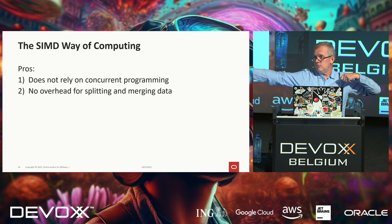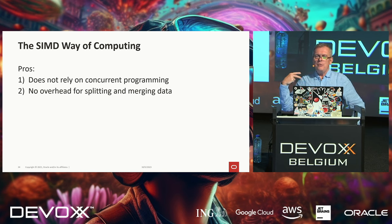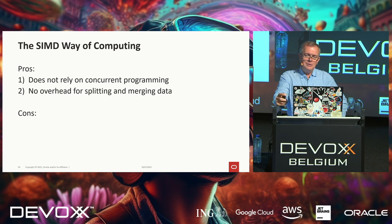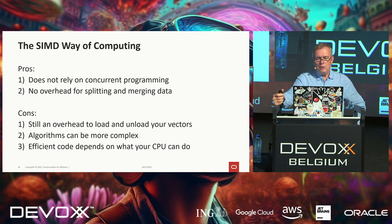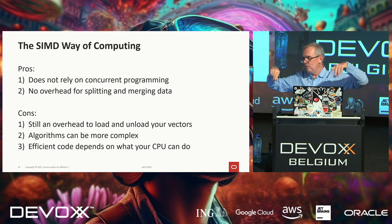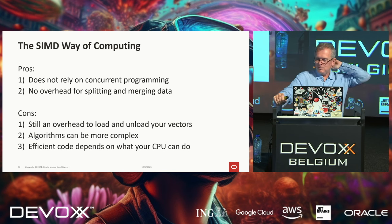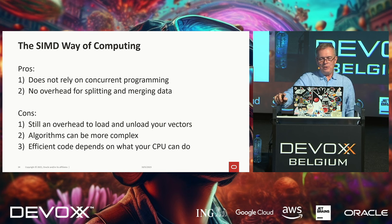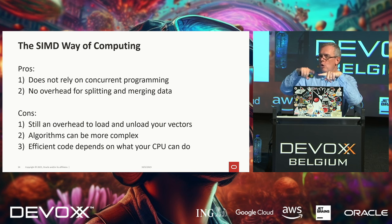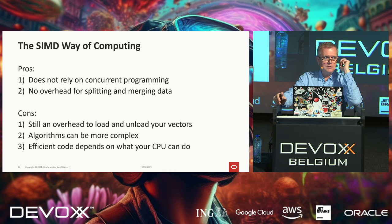The pros: it does not rely on concurrent programming, which is nice because concurrent programming is hard. The cons: it relies on SIMD computing, which is also hard to understand — you're just trading one hard thing for another. You don't have overhead for splitting and merging data, which is great. However, you still have overhead for loading and unloading vectors, the algorithms may be more complex, and the efficiency of your code depends on what your specific CPU can do beyond just having 256 or 512 bits.